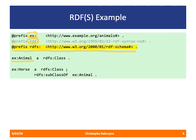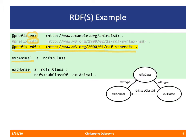The second statement declares horse as a class, representing all things that are horses. The third statement states that horse is a subclass of animals, so all things that are horses are also animals. Visually, horse is a subclass of animal, and both horse and animal are instances of RDFS class. Remember that 'a' is a shorthand provided by RDF turtle for RDF type.